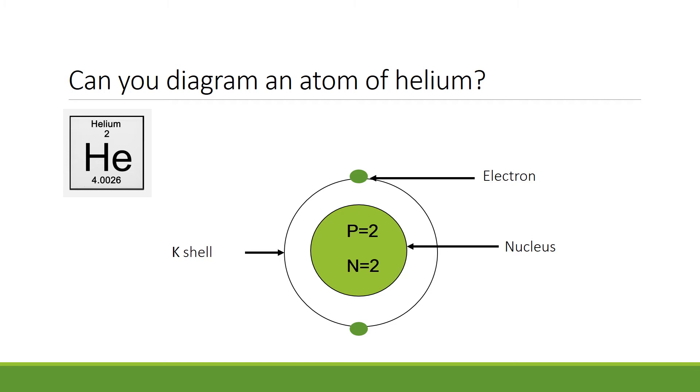Remember that the atomic number also tells you the number of electrons, so draw the first electron shell, or the K shell. Know that it will hold a maximum of 2 electrons, and helium has 2 electrons, which you should then place in this first electron shell, or the K shell.